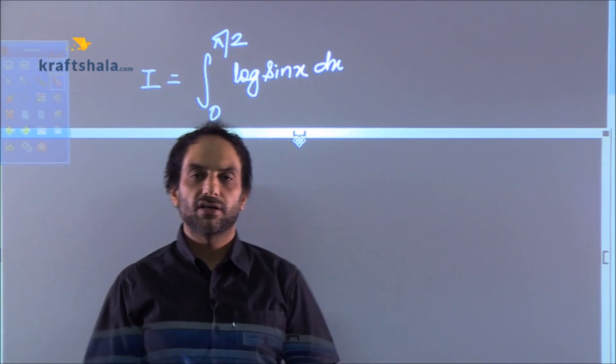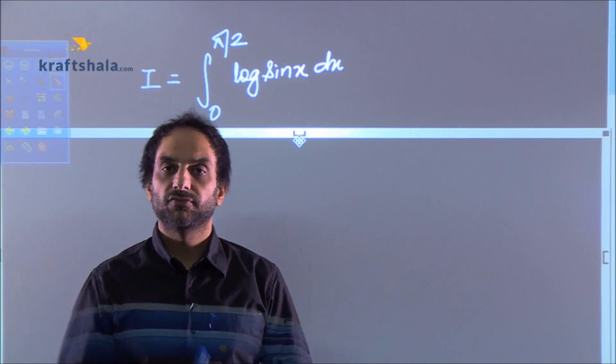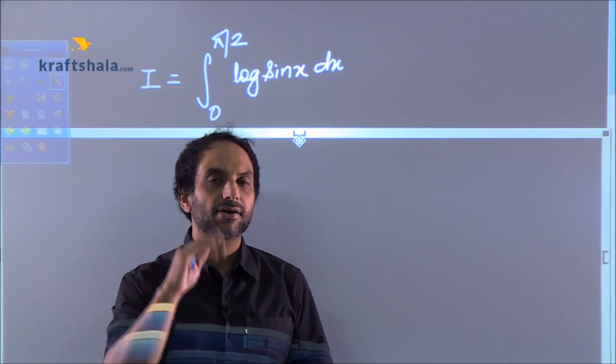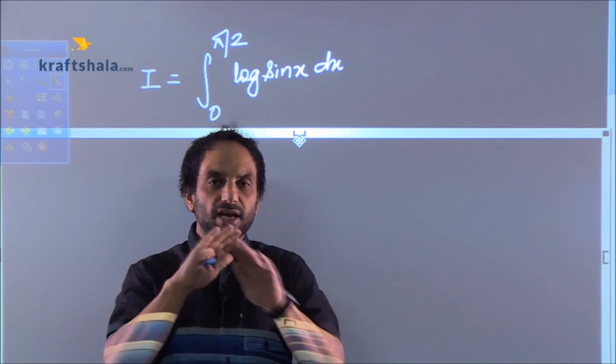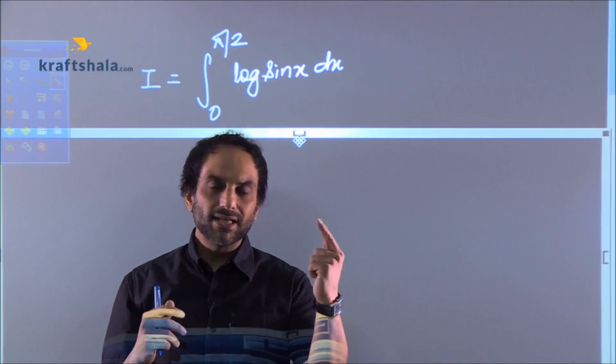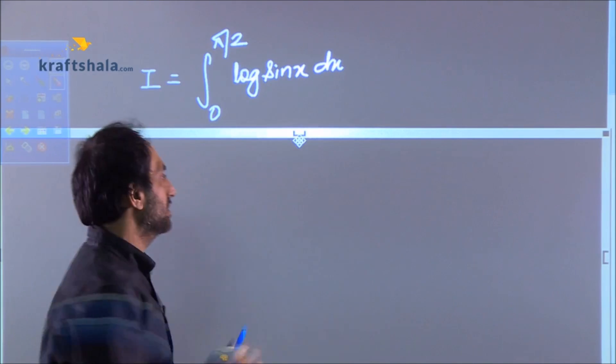0 to π/2 log sin x dx. This is one of the important questions for CBSE. Well, you are thinking right that instead of any other property, you will apply 0 to a to quickly change log sine to log cos. Yes, that is the logic.